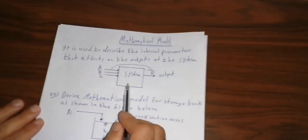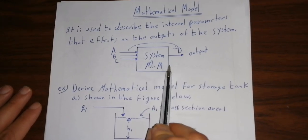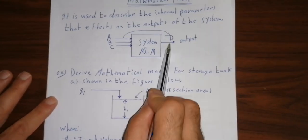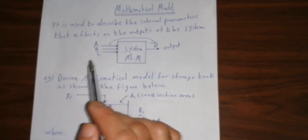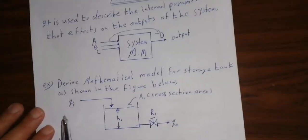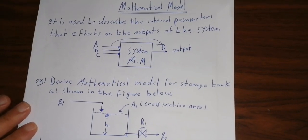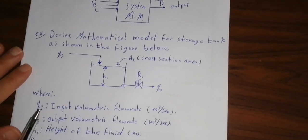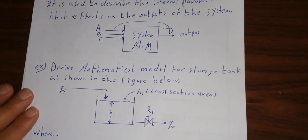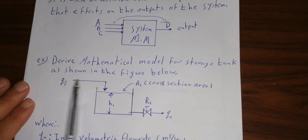So the system is called the mathematical model. This mathematical model has a, b, c representing temperature, pressure, and concentration of reactant affecting the output product generally. Now let us take an example about a simple process model, like a storage tank — derive a mathematical model for a storage tank, as shown in the figure below.